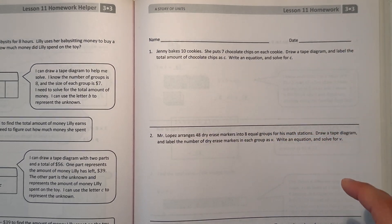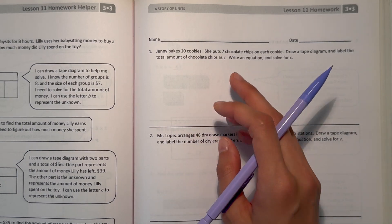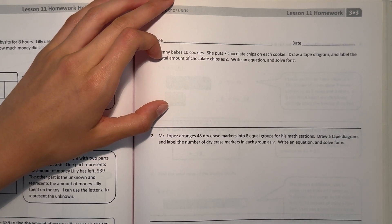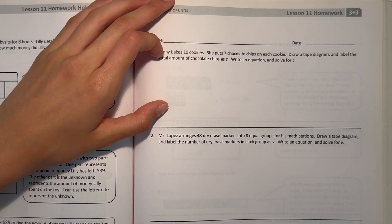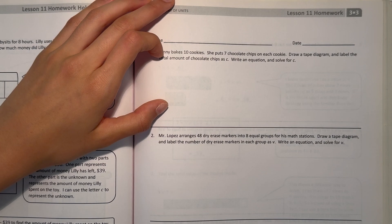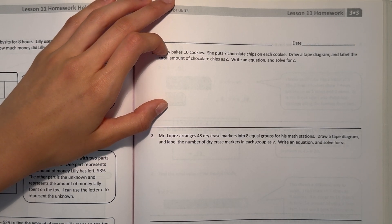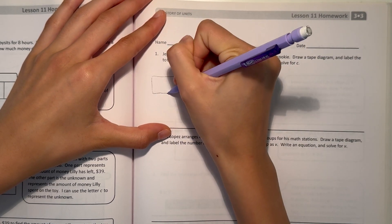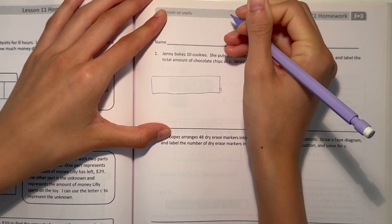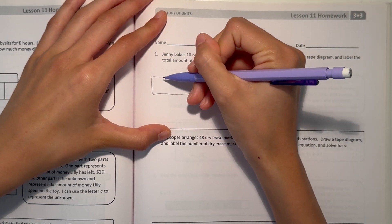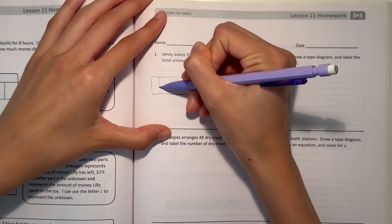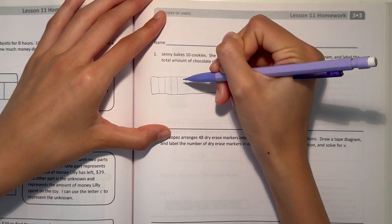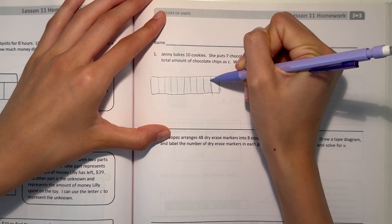Number 1, Jenny bakes 10 cookies. She puts 7 chocolate chips on each cookie. Draw a tape diagram and label the total amount of chocolate chips as C. 1, 2, 3, 4, 5, 6, 7, 8, 10.